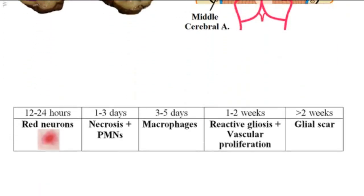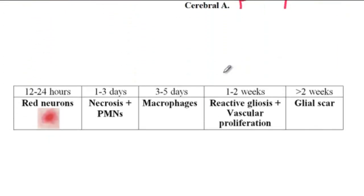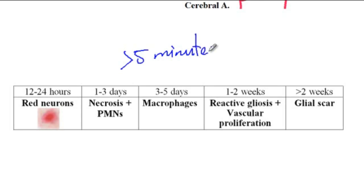How long would it take for ischemia to become irreversible in the neurons? Ischemia of more than five minutes is irreversible. These are the histological changes that will happen following infarction of the neurons. In the first 12 to 24 hours, you will see red neurons.